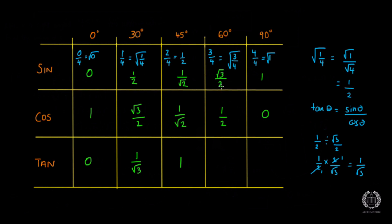For tan 60, we do root 3 over 2 divided by a half, which gives us root 3. For tan 90, you're doing 1 divided by 0, which is infinity — but I don't think they'll ask you that in the exam. So those are all your values for sine, cos and tan at angles 0, 30, 45, 60 and 90. It's very important to know these since they come up in non-calculator papers. That's pretty much the trigonometric ratio table — that's a wrap for this video and I'll see you on the next one.